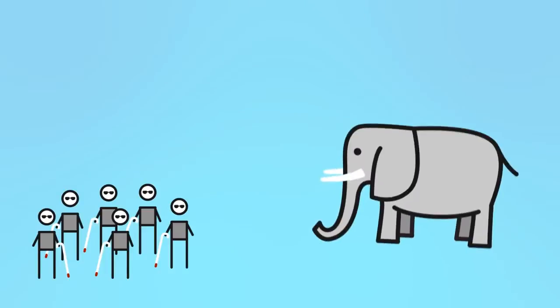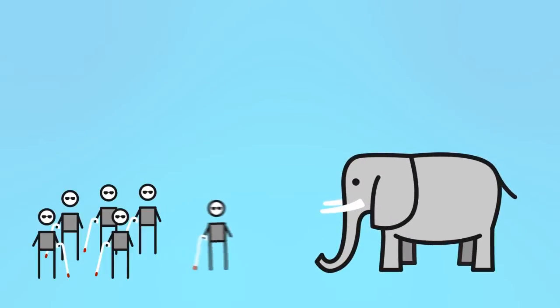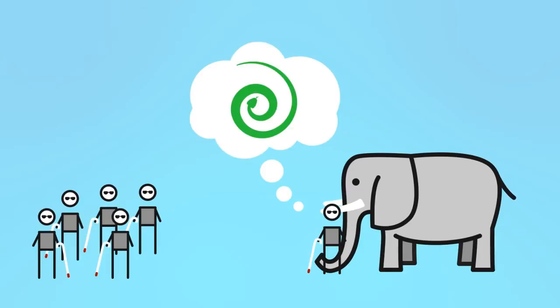Six blind men encountered an elephant for the first time. One of them felt the trunk of the elephant and said, this creature is like a snake.